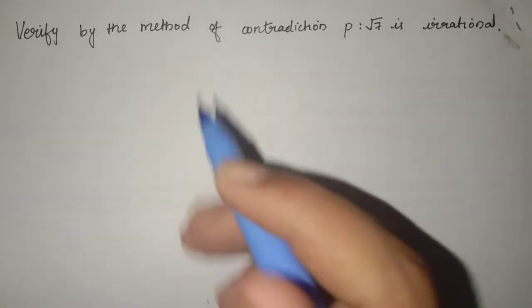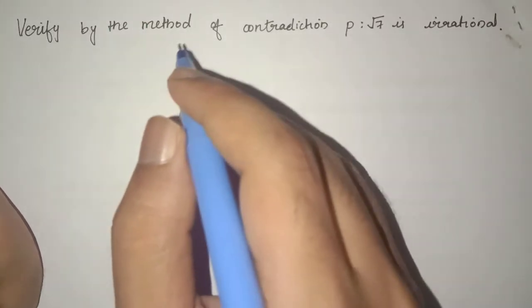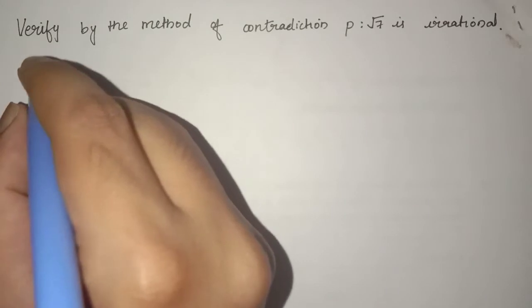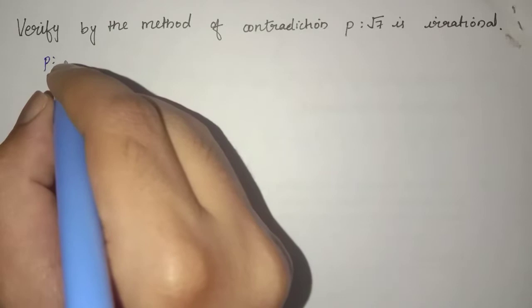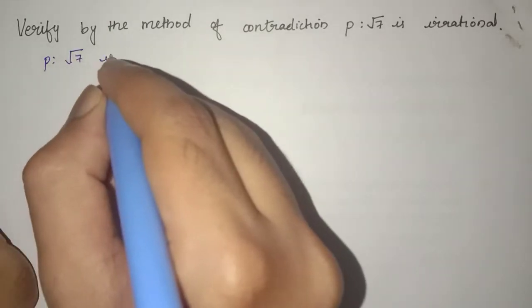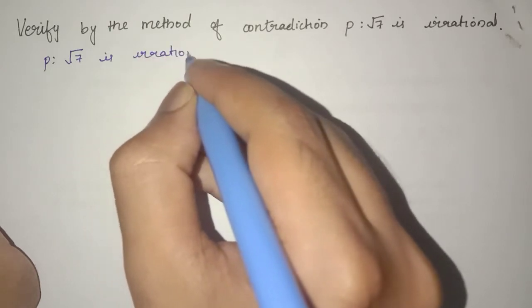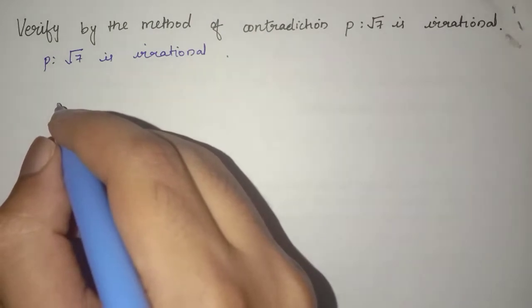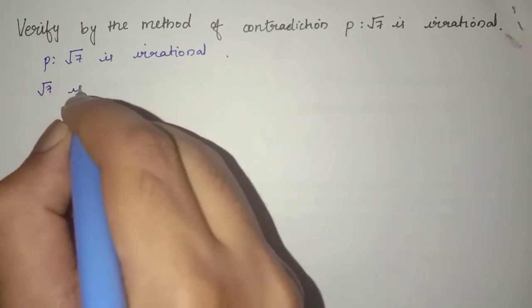We are asked to verify if root 7 is irrational by the method of contradiction. Let P be the statement that root 7 is rational. As we are verifying this with the method of contradiction, we assume that root 7 is rational.